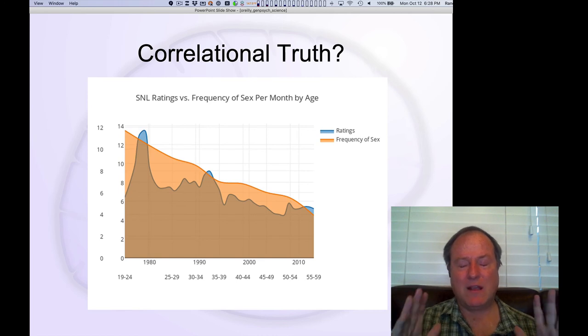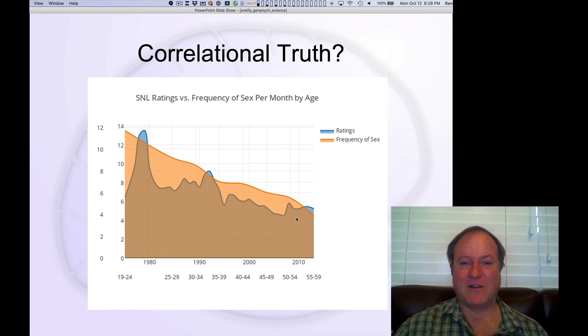Just to really hammer home this point about correlations. There are so many possible ways in which variables can look like they're related. So, this is a funny example of plotting ratings of Saturday Night Live, this famous TV show, versus frequency of sex per month by age. And, indeed, the ratings of SNL have kind of gone down. And so does the frequency of sex over age. So, does that mean that someone's what? I don't even know what that means. But this is kind of an absurd example. But there are many such possible kinds of relationships that show up. I'll show you later a website that has many funny examples like this.